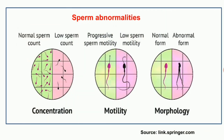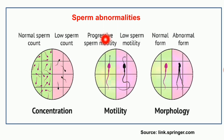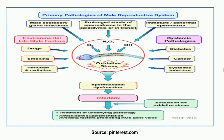Sperm abnormalities can be visualized: normal sperm count versus low sperm count in terms of concentration; progressive sperm motility versus low sperm motility; and normal sperm morphology (shown in green) versus abnormal morphology. This slide highlights the differences between normal and abnormal sperm conditions. Some primary pathologies of the male reproductive system related to infertility are also referenced here for deeper understanding.